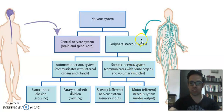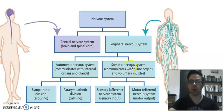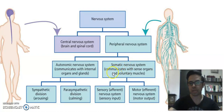I would like you to focus your attention on the peripheral nervous system. It is divided into the autonomic nervous system, which is in charge of the automatic responses of our body, generally related to organ function and some gland functions, and also the somatic nervous system, which is in charge of communicating the sense organs and also some voluntary muscles. Remember that the word soma means body, so this is the part that we can in some way control.